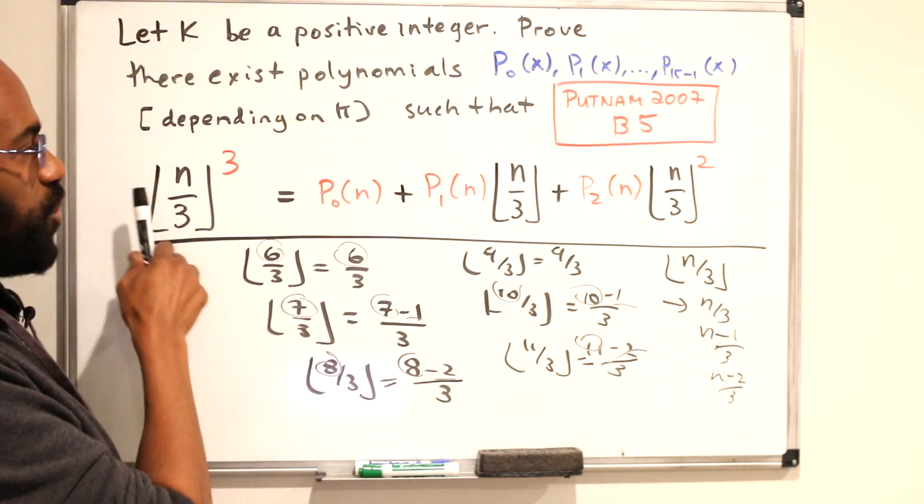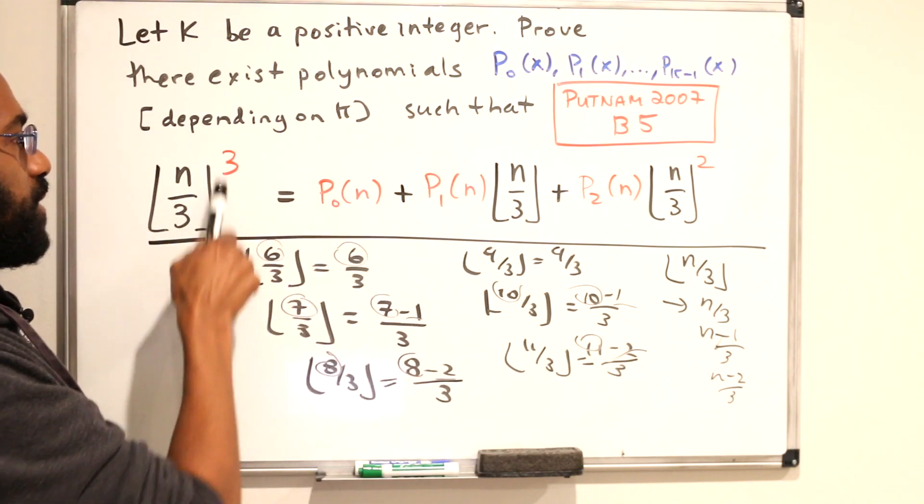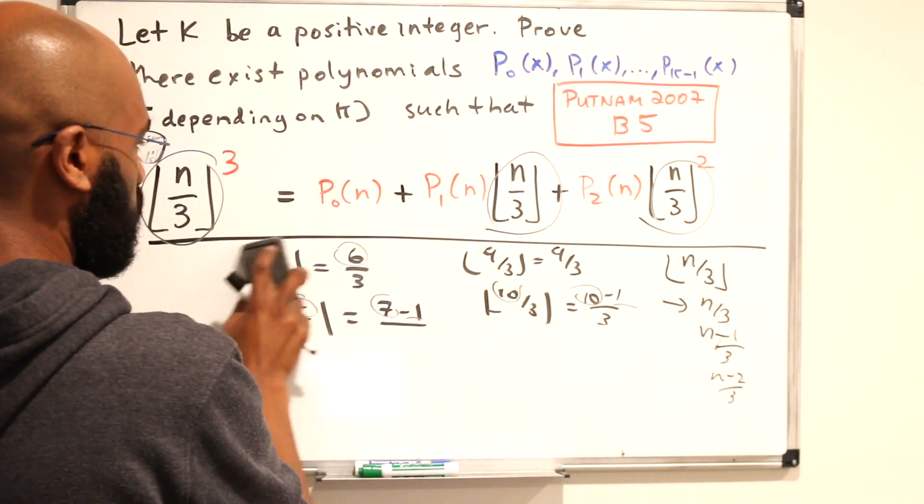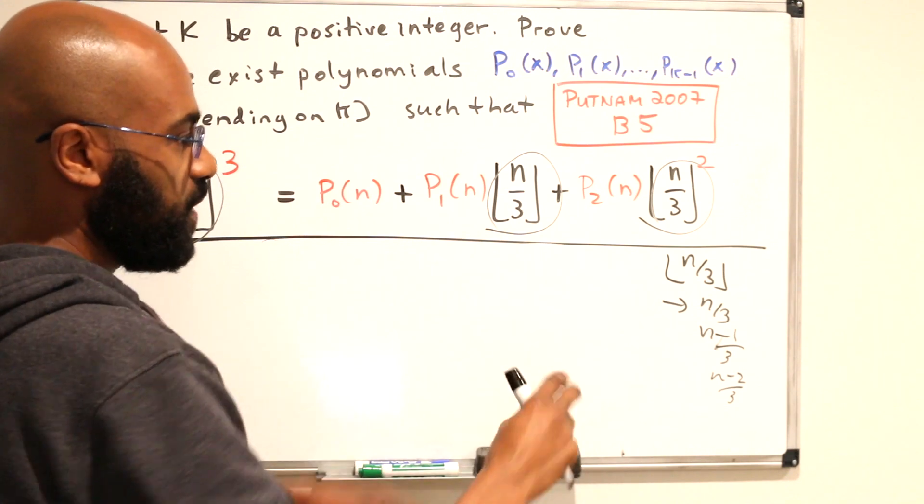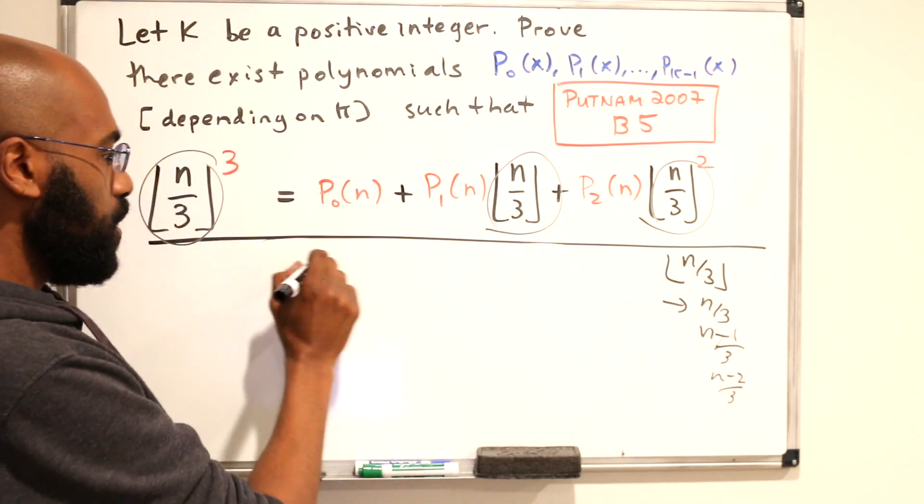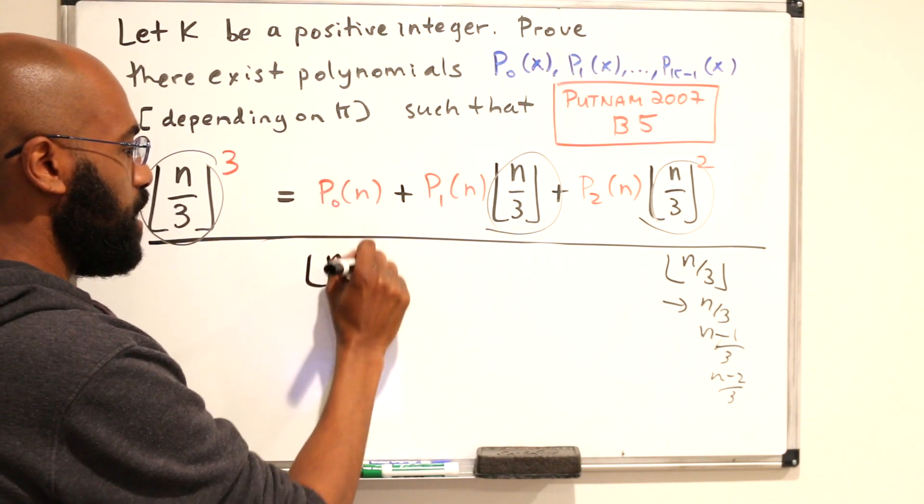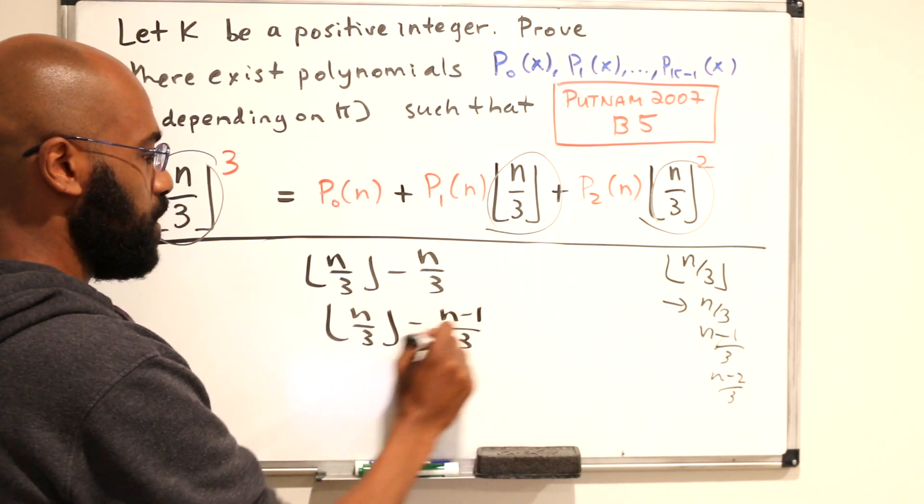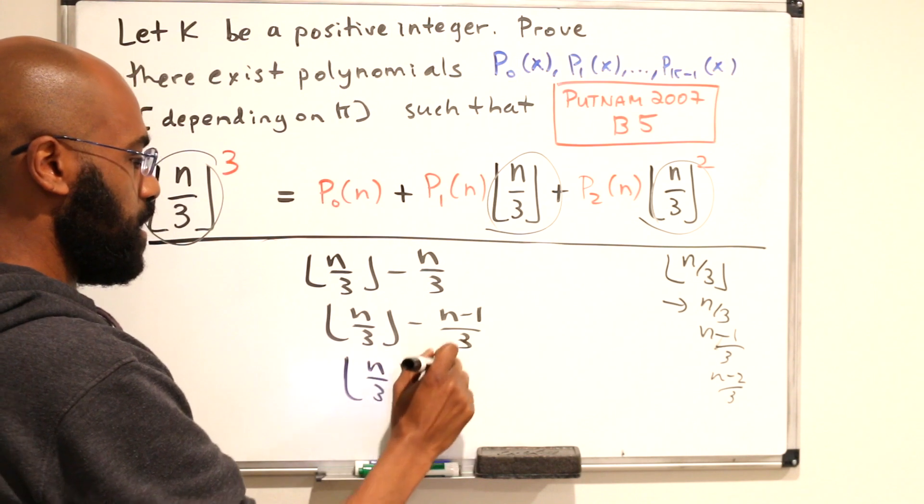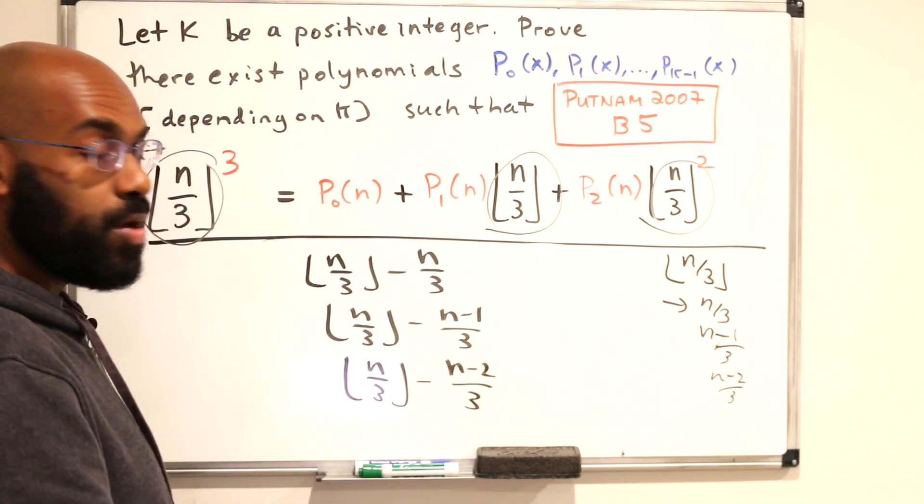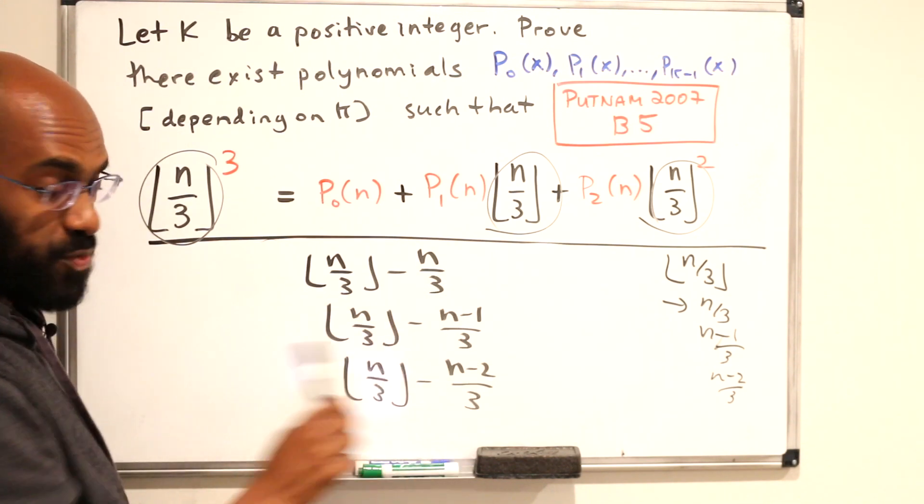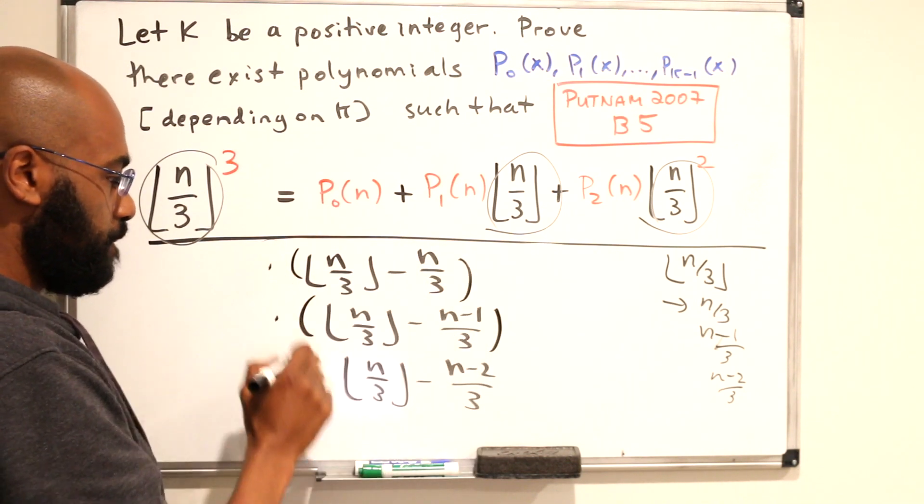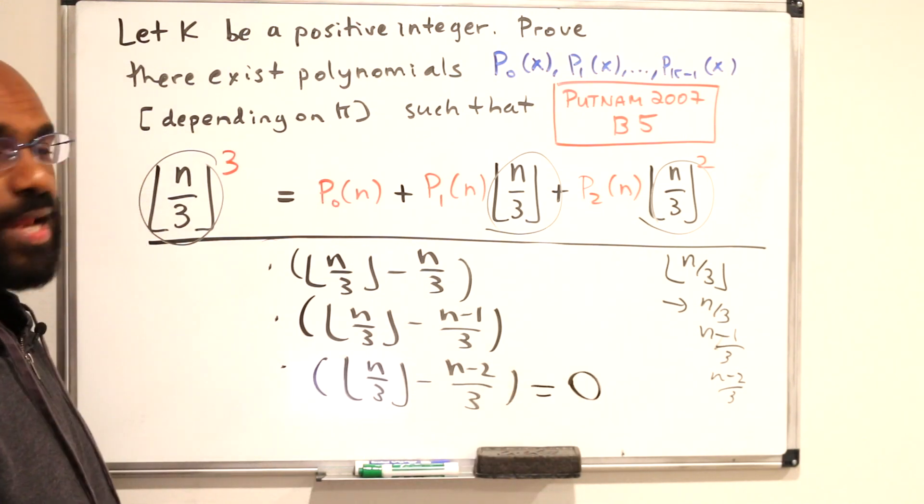How does that help us get a cubic equation that the floor of n over 3 satisfies? Well, knowing that the floor of n over 3 satisfies one of these three values, we get then that one of these three quantities, this, this, or this, has to be identically zero, no matter what n is. Again, because the floor of n is one of these three values. So if we actually multiplied all of these three, we'd get zero, no matter what n is.